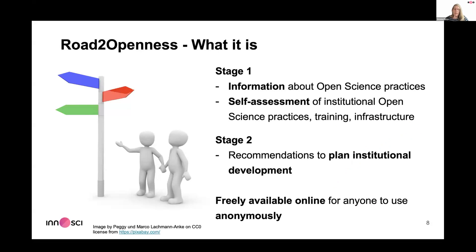Road to Openness is relatively easy to explain. It's essentially a large questionnaire with two different stages. The first stage provides information about different open science practices. Then comes a big questionnaire to self-assess what open science practices look like at the institution — what training is available and what infrastructure support exists. The second, perhaps more interesting stage offers recommendations based on questionnaire answers so institutions can plan their development strategically.